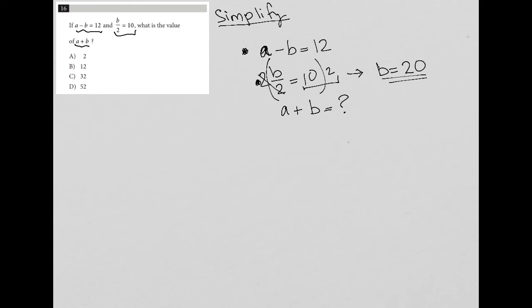Now, that's very helpful because from that, I can plug B into this first equation and solve for A. So I'm going to do that. I'm going to have A minus, instead of minus B, I'm going to say minus 20, since we know B equals 20, is equal to 12. So A minus 20 equals 12.